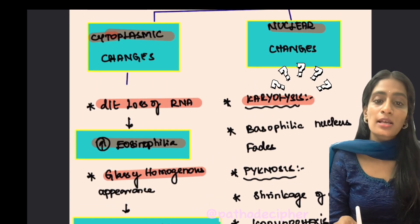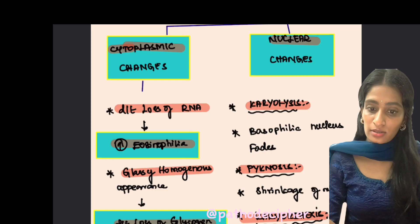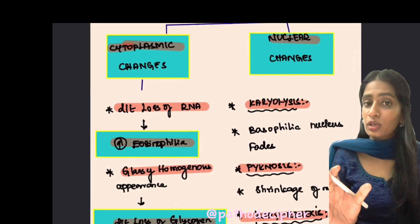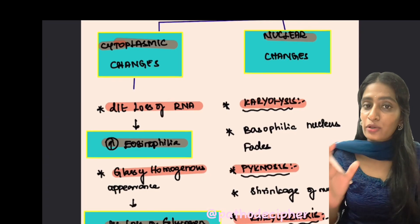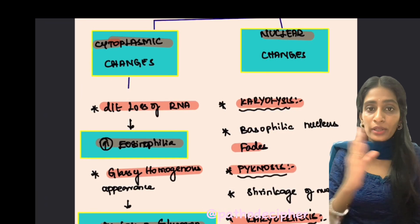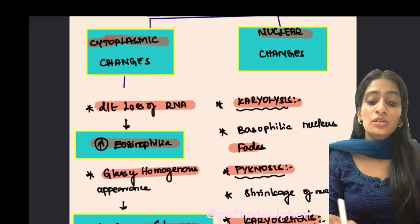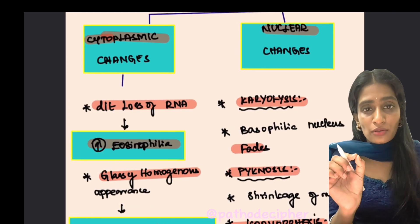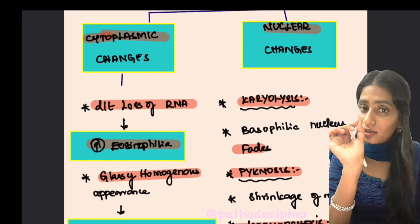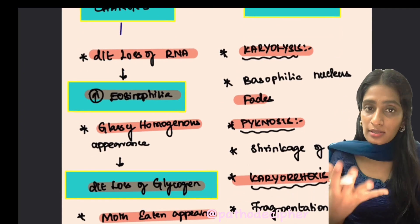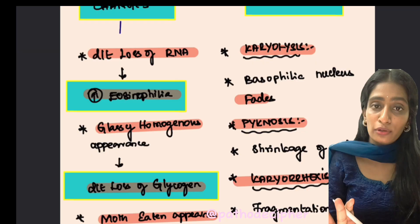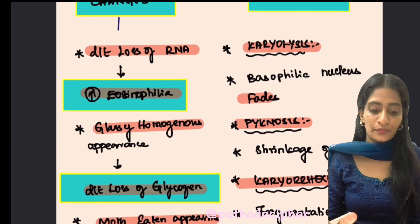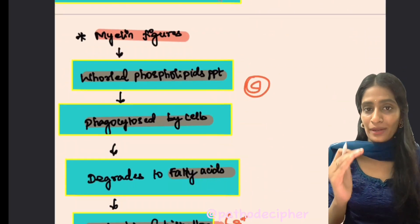Nuclear features appear in three patterns: karyolysis, pyknosis, and karyorrhexis. Karyolysis is the fading away of the basophilic nucleus — normally the nucleus appears blue in histology, but it fades when necrosis is severe. Pyknosis means shrinkage of the nucleus into a small dot. Karyorrhexis means fragmentation of the nucleus into multiple pieces.